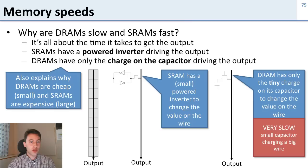It also explains why they're cheap and expensive. DRAMs are much smaller. You don't have to run power wires to them. You only have to make one transistor and one capacitor. SRAMs need a total of six transistors in order to build that plus they need the power wires. So they're much larger which makes them more expensive.